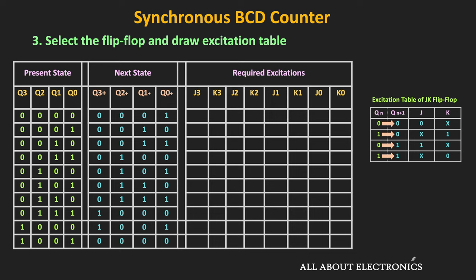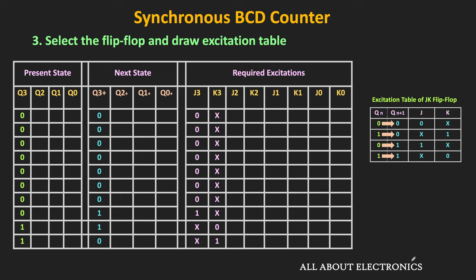Let us find the required excitations for J3 and K3. Q3 represents the present state and Q3+ represents the next state. Using the JK flip-flop excitation table: for a 0→0 transition, J=0, K=X; for a 0→1 transition, J=1, K=0; for a 1→0 transition, J=X, K=1. In this way, we get the required values of J3 and K3.